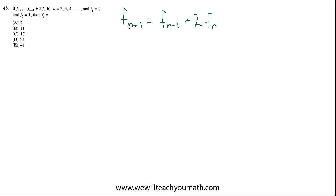So, using the same example, if n is 2, this is f3. Let's just do this for a minute. Suppose n equals 2. Then this is saying that f3 equals f1, right? 2 minus 1 is 1, plus 2 f2. And you can do this with every value of n. For n equals 3, this would be f4 equals f2 plus 2 f3, and so on.